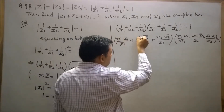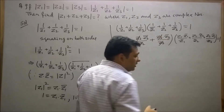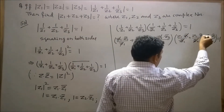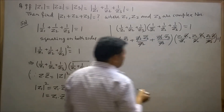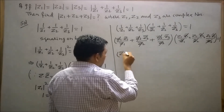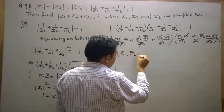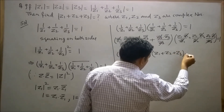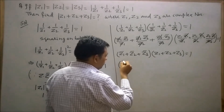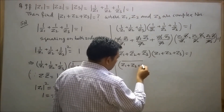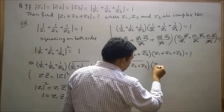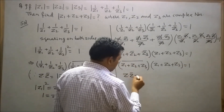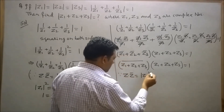The z1-bar terms cancel, z2-bar terms cancel, and z3-bar terms cancel. So we get (z1-bar + z2-bar + z3-bar) times (z1 + z2 + z3) equals 1. This can be written as the conjugate of (z1+z2+z3) times (z1+z2+z3) equals 1. We know that z times z-bar equals the square of the modulus of z.